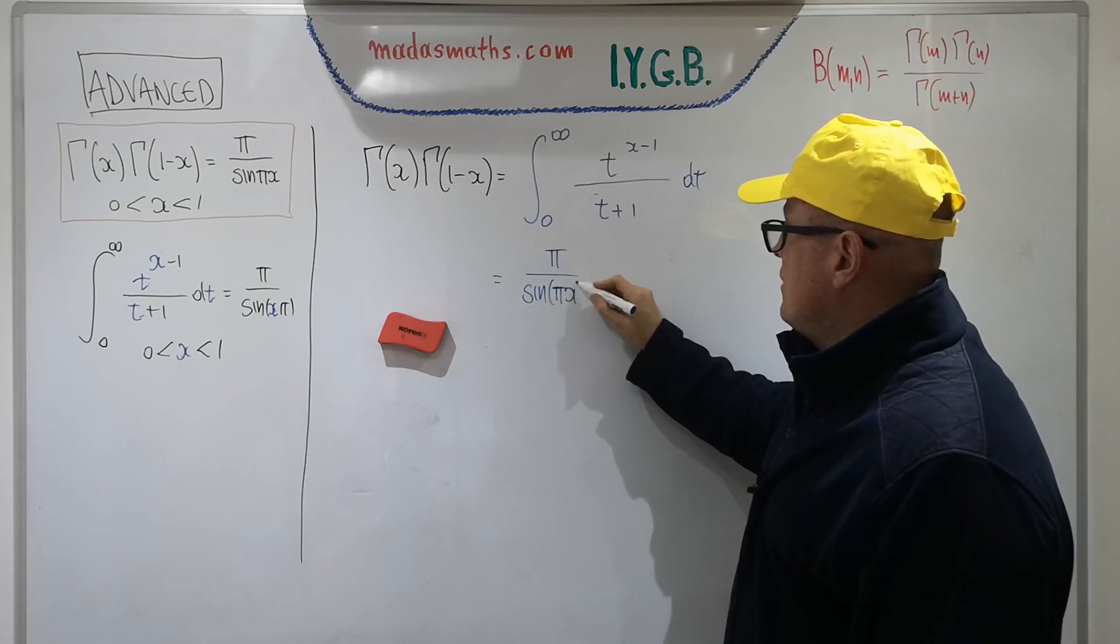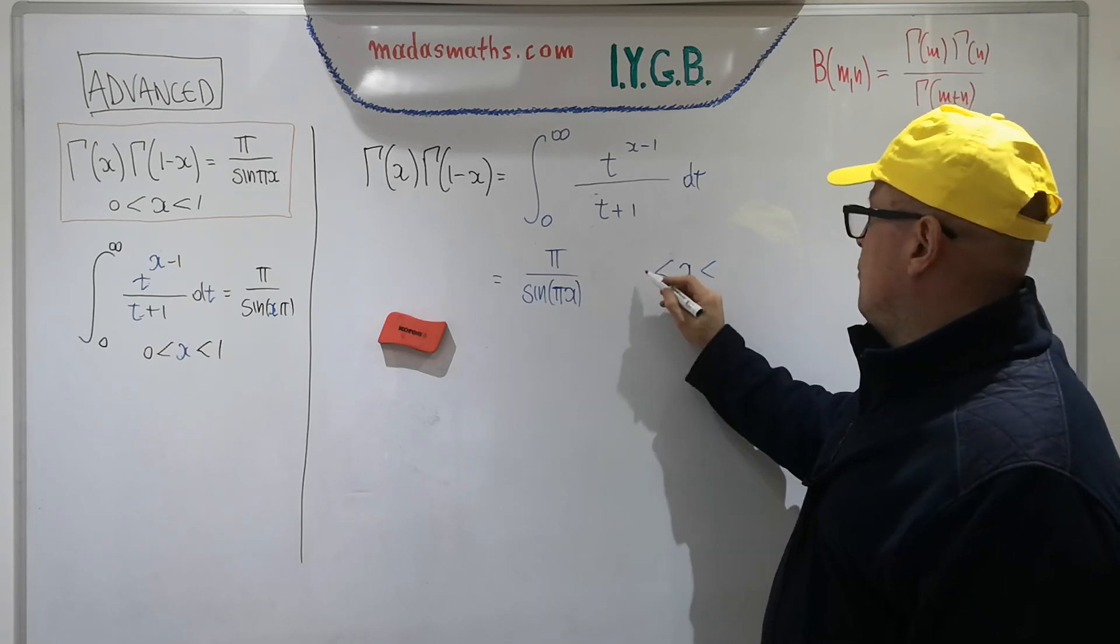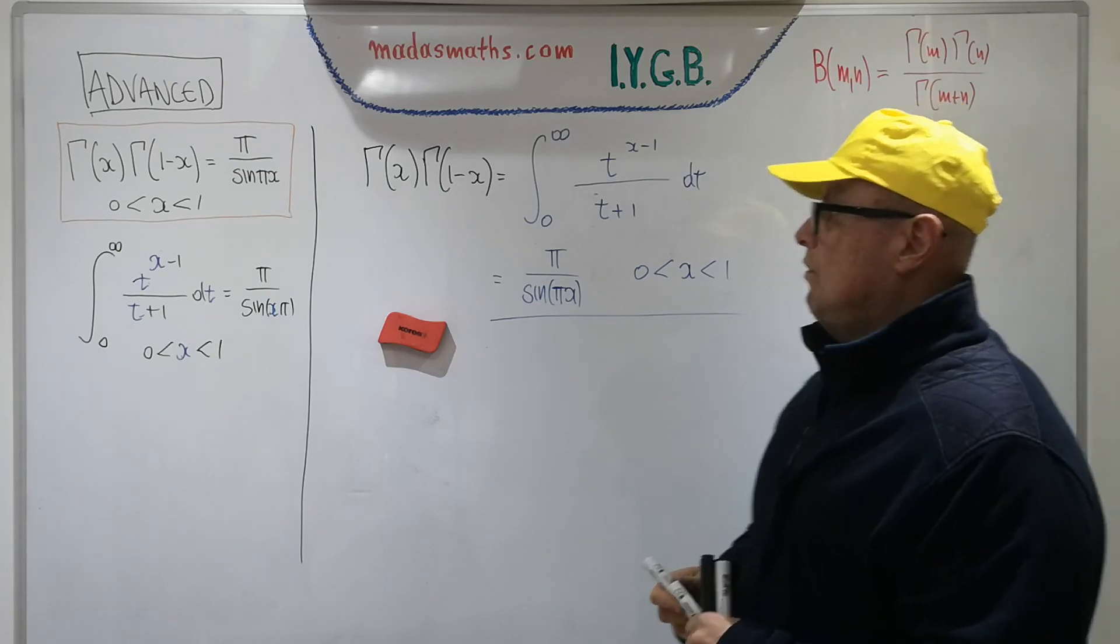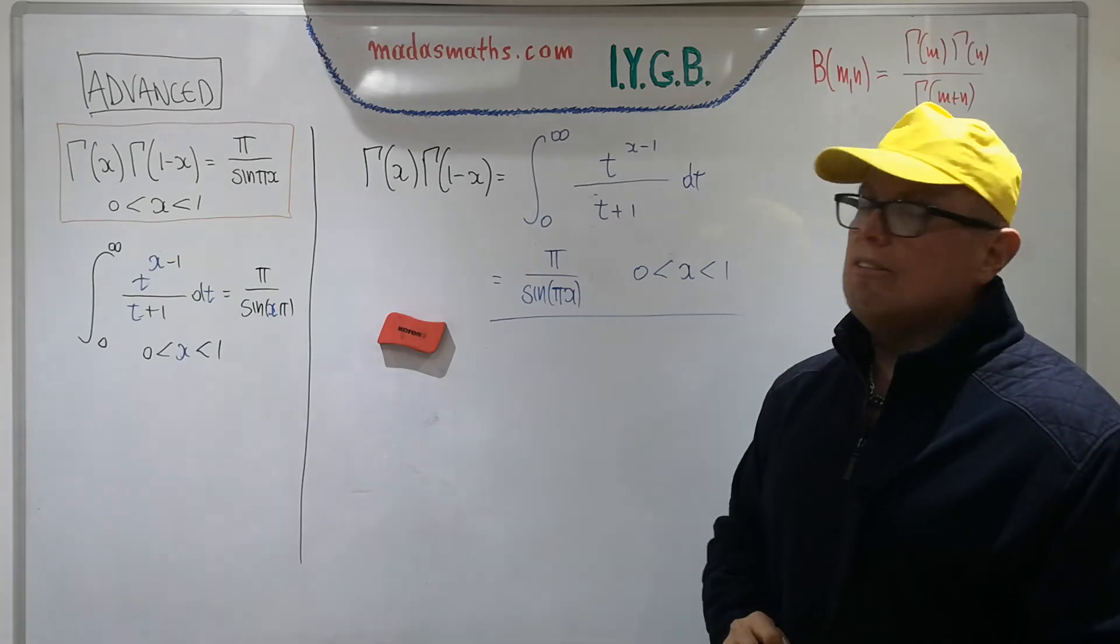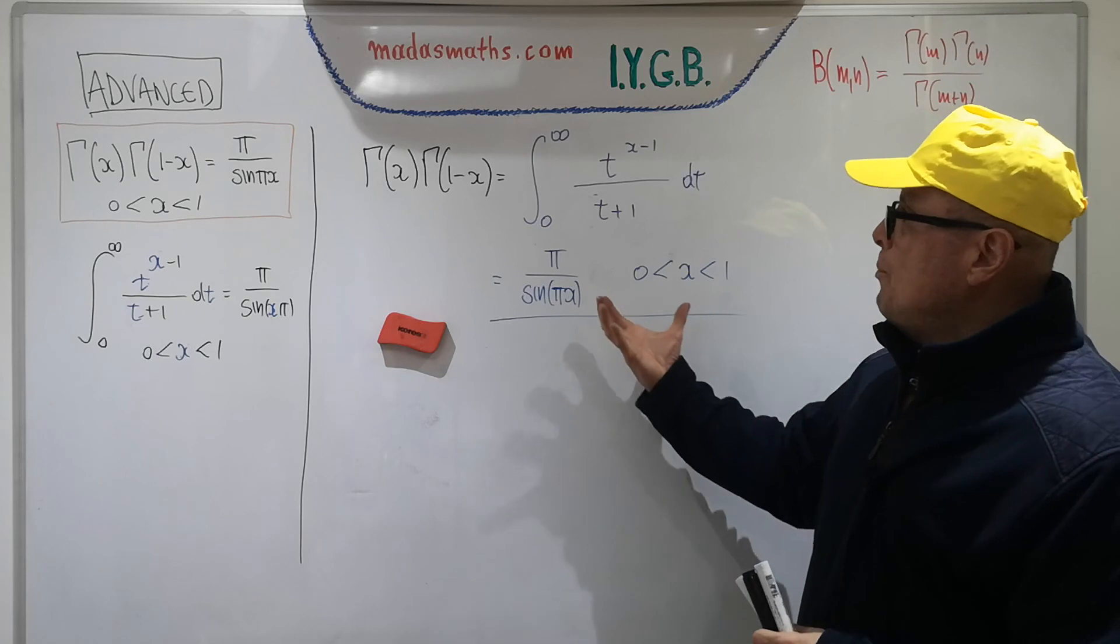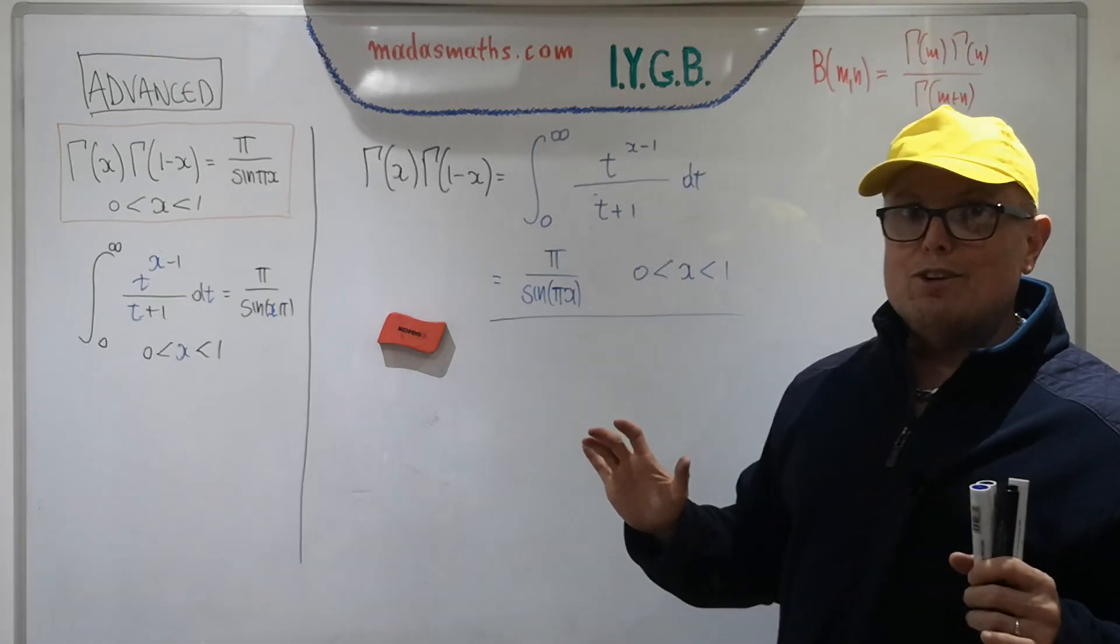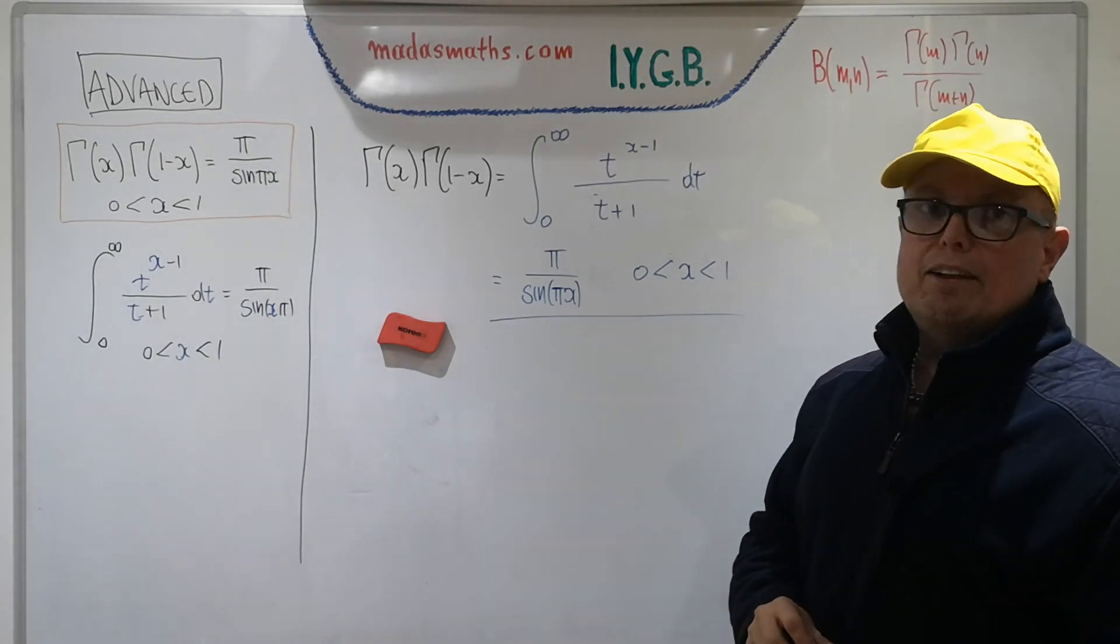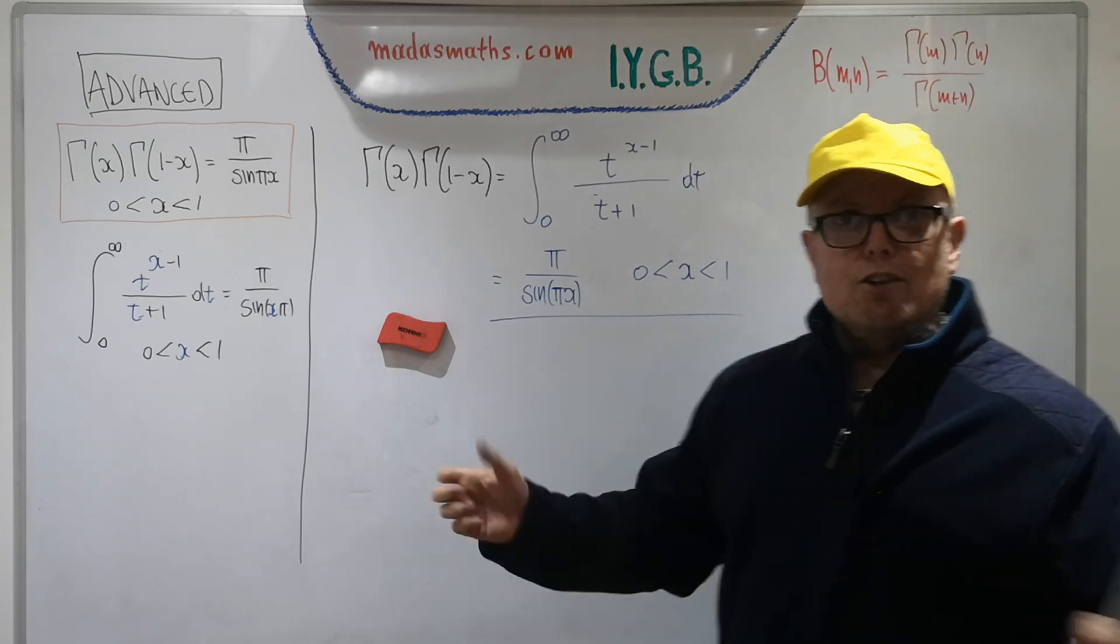This now is the result pi over sine of pi x, and it works in the real sense for values of x between 0 and 1. This is what this bizarre interval was all about. I hope you followed. I'm not going to start a series of lectures now on gamma and beta, although this is one of my favorite topics. I hope you understood what I've done. I'll see you very soon.